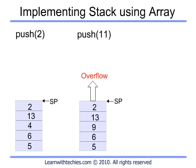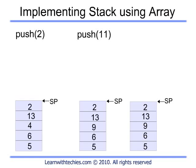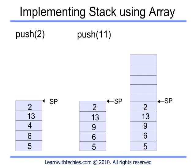The push operation must return an error condition whenever the stack has reached its limit. If we want to push more elements, we need to increase the size of the backing array. In C and C++ we can use the library function realloc to increase the array size. However, the drawback is that it is time-consuming to allocate space for a new array and then copy all elements from the old one. When push detects a stack overflow condition, it doubles the array size, copies the old array to the new one, and then stores element 11 with SP incremented accordingly.